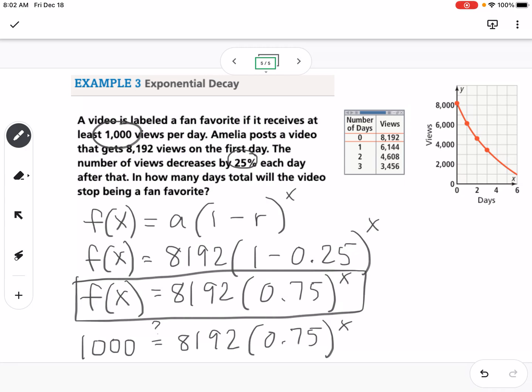So if you plug in, start with 1, 1's way too small, maybe jump up to 5, still too small. So keep plugging in numbers, and what you will find is that if x equals 8, that's going to fall below the fan favorite of 1,000 views. So we would say 8 days.